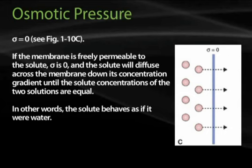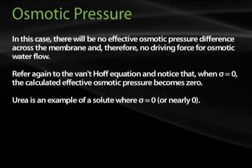When sigma equals 0, shown in figure 1-10c, also from page 14: if the membrane is fully permeable to the solute, sigma equals 0, and the solute will diffuse across the membrane down its concentration gradient until the solute concentrations of the two solutions are equal. In other words, the solute behaves as if it were water. In this case, there will be no effective osmotic pressure difference across the membrane, and therefore no driving force for osmotic water flow. Referring to the van't Hoff equation, when sigma equals 0, the calculated effective osmotic pressure becomes 0. Urea is an example of a solute where sigma equals 0, or at least nearly 0.